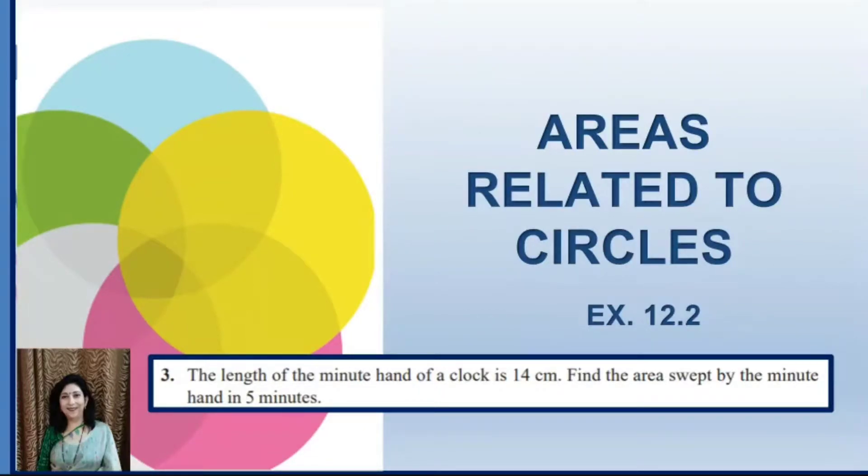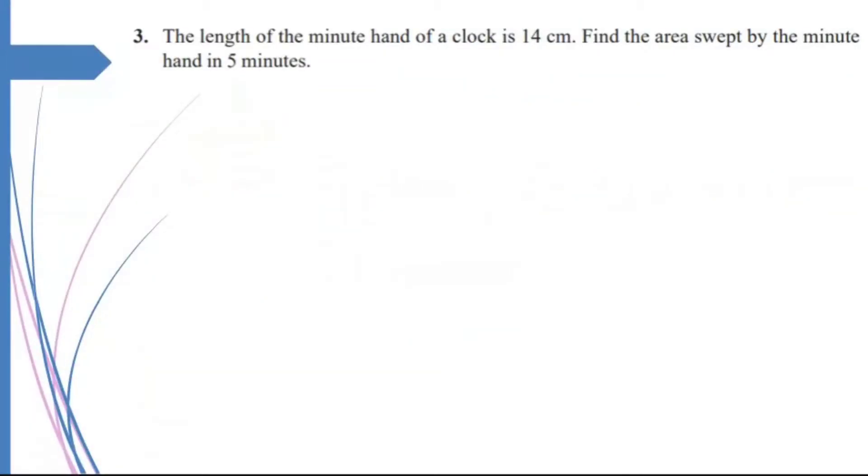Let us check out the third question first of all. The length of a minute hand of a clock is 14 centimeters. Find the area swept by the minute hand in 5 minutes.